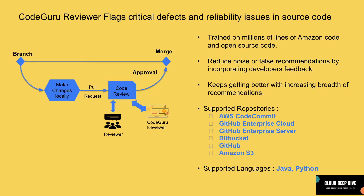Now that we understand what challenges we face during code review, let's see how CodeGuru Reviewer can help us. CodeGuru Reviewer is a service offered by Amazon which uses program analysis and machine learning to detect potential defects and recommend fixes in your Java and Python code — defects which are difficult for a developer to find. CodeGuru Reviewer is trained on millions of lines of Amazon code and open source code. It helps reduce false recommendations by incorporating developer feedback — whenever it provides a recommendation, you as a developer can give feedback to it.